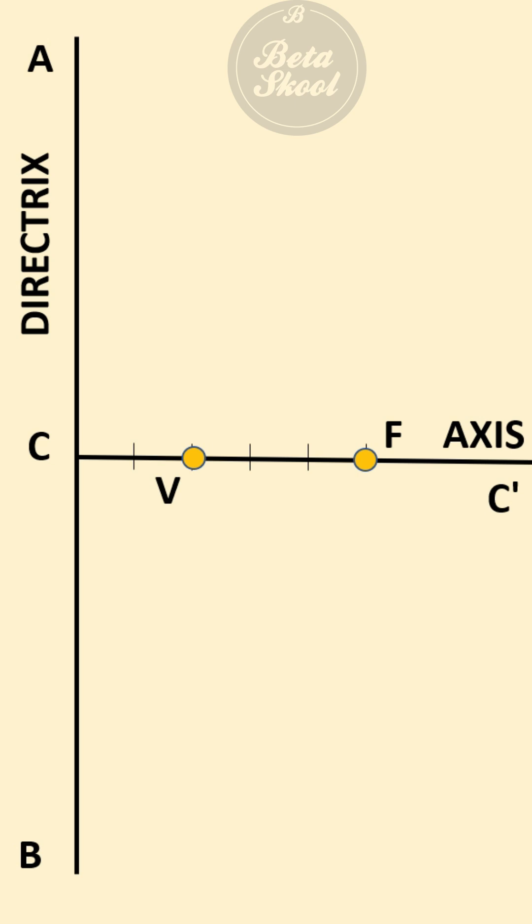At this point, you draw a vertical line. On it you mark point D such that VD equals VF. Now join CD and extend it. Now take some points between V and C', name them 1, 2, 3, 4.